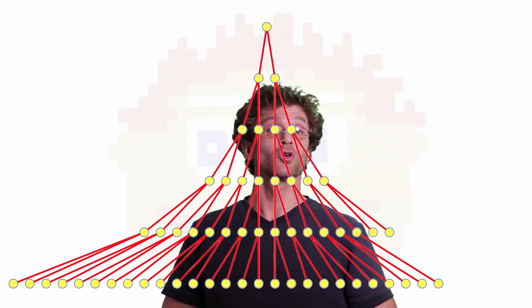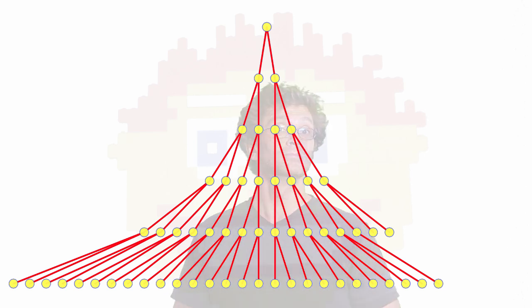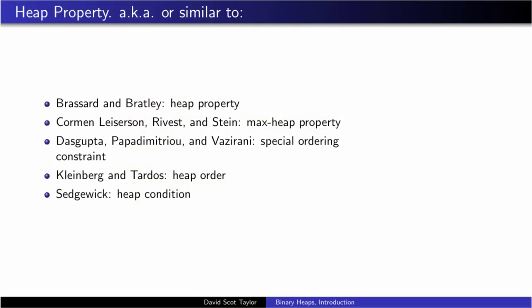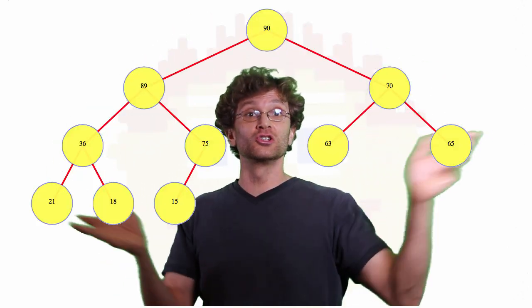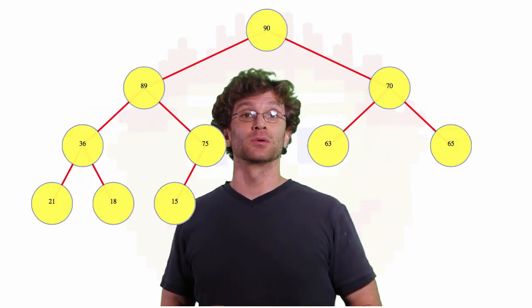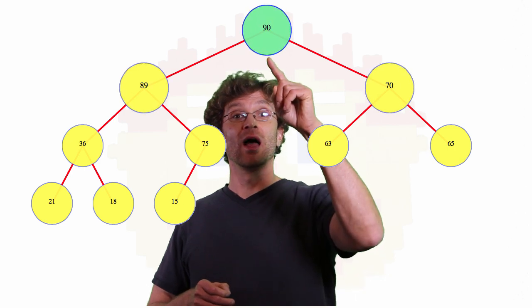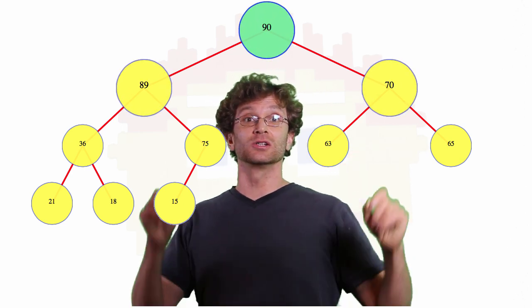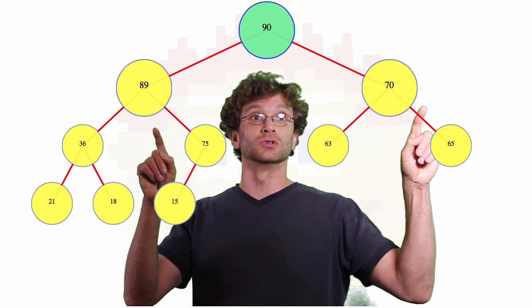The next thing that we are going to talk about is called the heap property. To discuss the heap property, we are going to actually have to look at some values in the tree. A heap is an abstract data type, you can store whatever you like, but for our purposes, we are just going to look at it with some integer keys. The heap property says any node has a value at least as large as the value in that node's children.